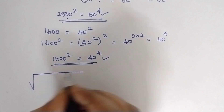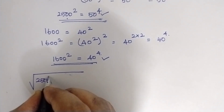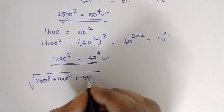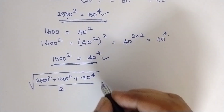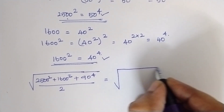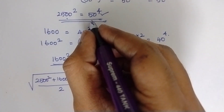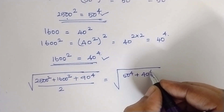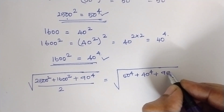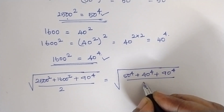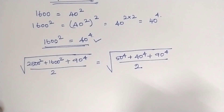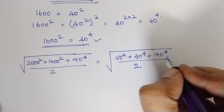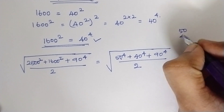So just apply these two values in the question. The question is: the square root of (2500 whole square) plus (1600 whole square) plus (90 to the power 4), all divided by 2. Now substituting, this becomes the square root of 50 to the power 4, plus 40 to the power 4, plus 90 to the power 4, divided by 2.